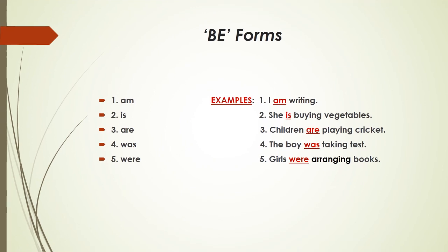Let's learn about be forms. In present tense, we have three be forms: am, is, are. And in past tense, we have two auxiliary verbs: was and were.